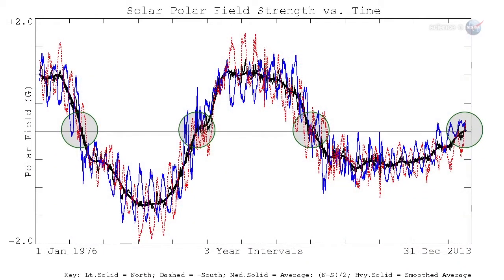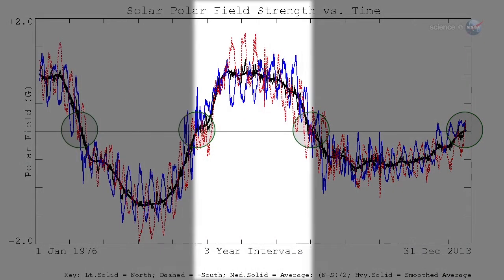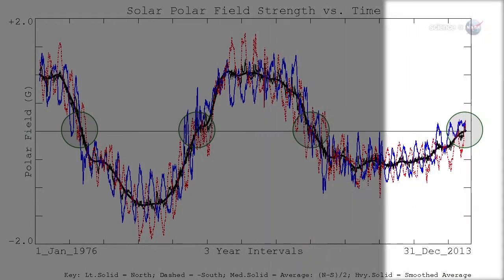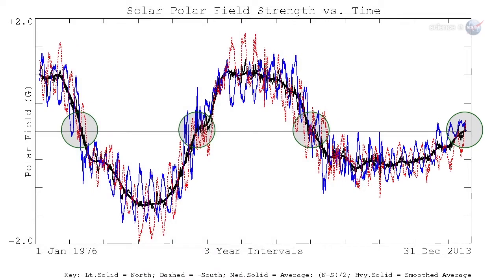Magnetograms at Wilcox have been tracking the Sun's polar magnetism since 1976, and they have recorded three grand reversals, with a fourth in the offing. Solar physicist Phil Shearer, also at Stanford, describes what happens. The Sun's polar magnetic fields weaken, go to zero, and then emerge again with the opposite polarity. This is a regular part of the solar cycle.